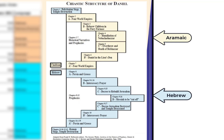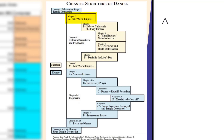Chapters 8 through 11 appear to be the second chiasm. Both chiasms appear to be precise parallels in content and meaning. Notice the A section: in chapter 2 it talks about the four world empires, and down in chapter 7 it also talks about four world empires.